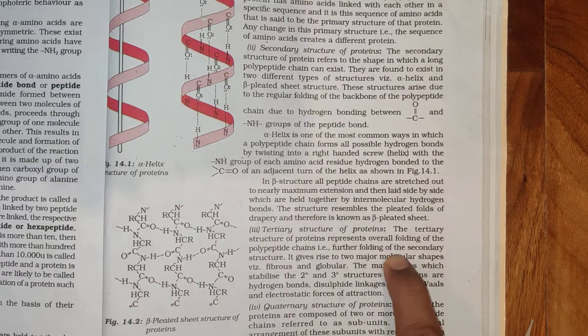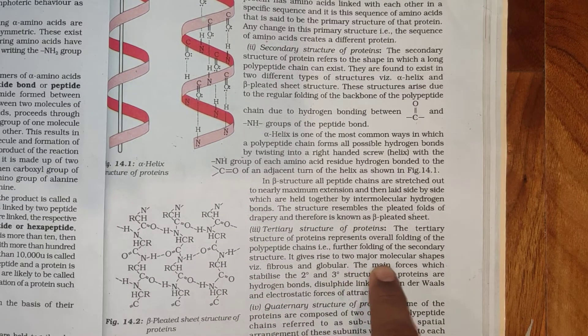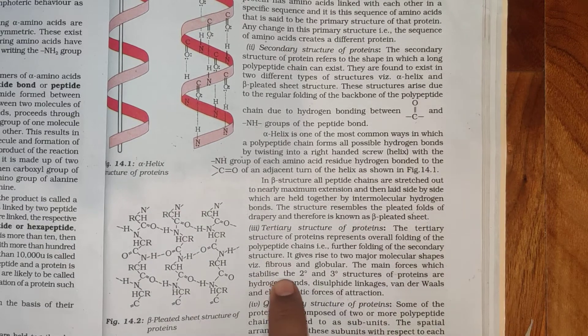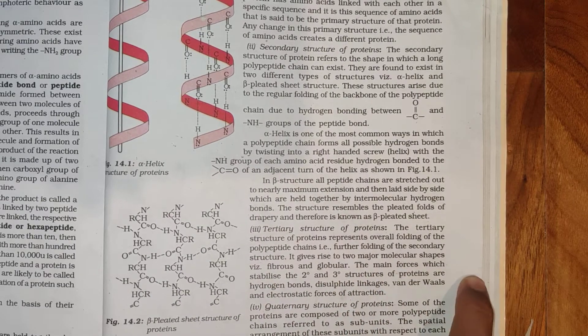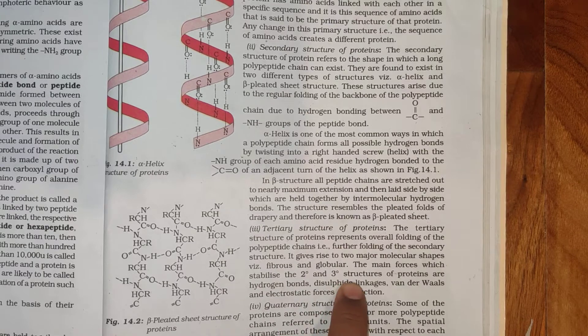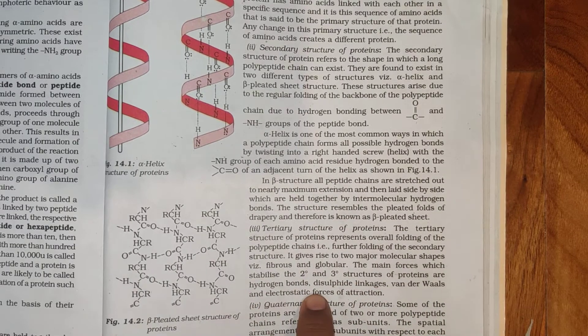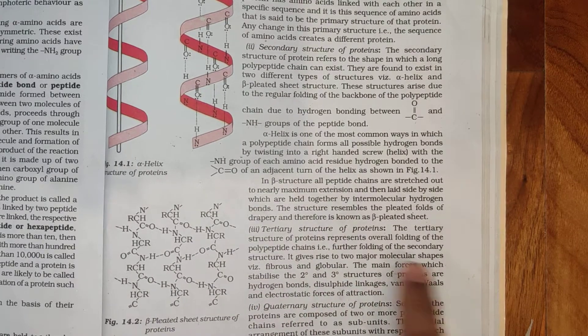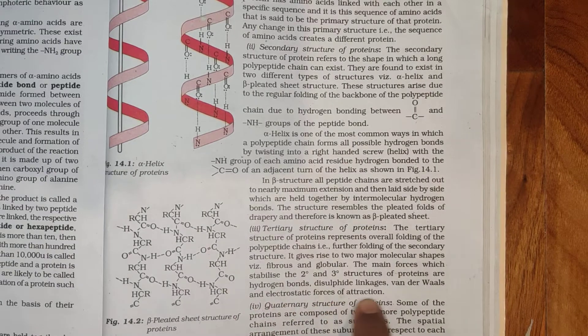Tertiary Structure of Proteins: The tertiary structure of proteins represents overall folding of the polypeptide chains, further folding of the secondary structure. It gives rise to the two major molecular shapes which is fibrous and globular. The main forces which stabilize the 2 degree and 3 degree structures of proteins are hydrogen bonds, disulfide linkages, van der Waals and electrostatic forces of attraction.